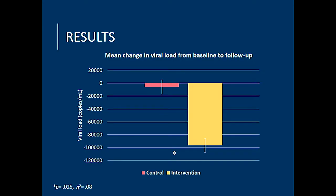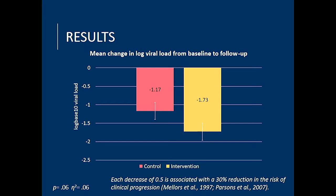Moving on to the results — this was our primary outcome: change in viral load over time from baseline to follow-up. The intervention condition decreases significantly more than the control group over time. More commonly we report the log transformed score, which is an expression of these numbers to the power of 10. The intervention condition marginally significantly improved at p=0.06 versus the control group, and that's actually a clinically significant reduction. Any change of 0.5 or more in log viral load is associated with a 30% decrease in the risk of clinical progression. It's important to remember we'd expect everyone to get better because everyone had adherence counselling, but our brief intervention was able to improve it to a clinically significant amount even above that.